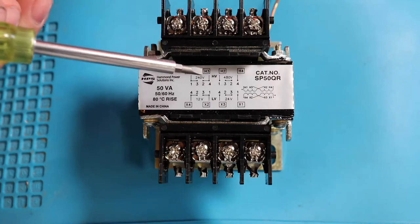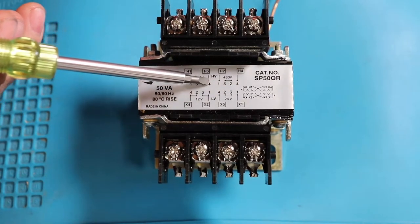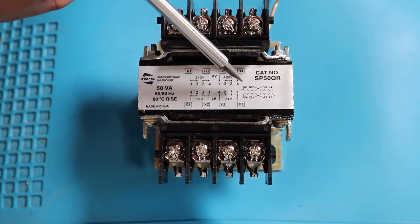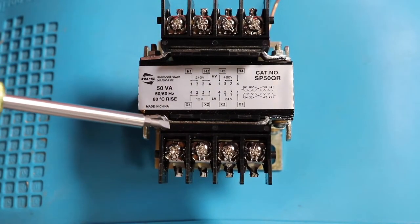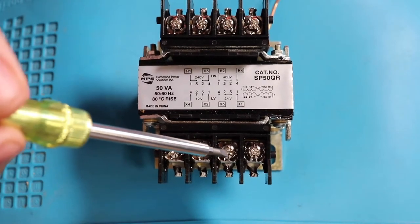So just to be clear and there's no confusion, these numbers, the order of them line up with the screws. So 4, 2, 3, 1 is 4, 2, 3, 1. Over here on the secondary side, same thing, 4, 2, 3, 1.